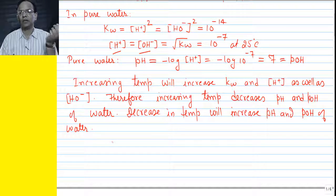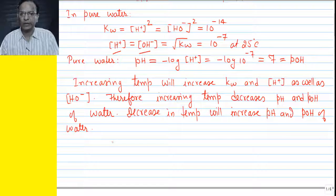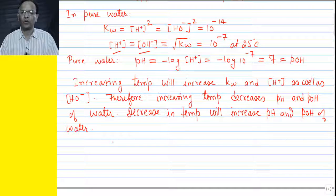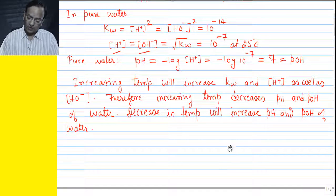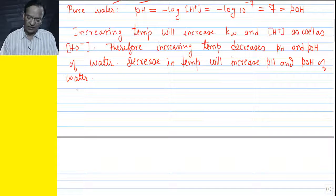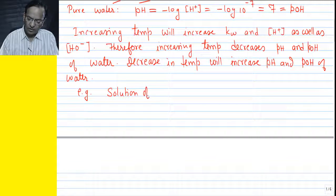Now a very important concept: how is the ionization of water going to be affected if it is in a solution of acid or base? And what will be the role of this ionization in calculating [H⁺] and [OH⁻] in the case of a solution of acid and base? To understand that, let us take an example of a solution of a strong acid — HCl in water.